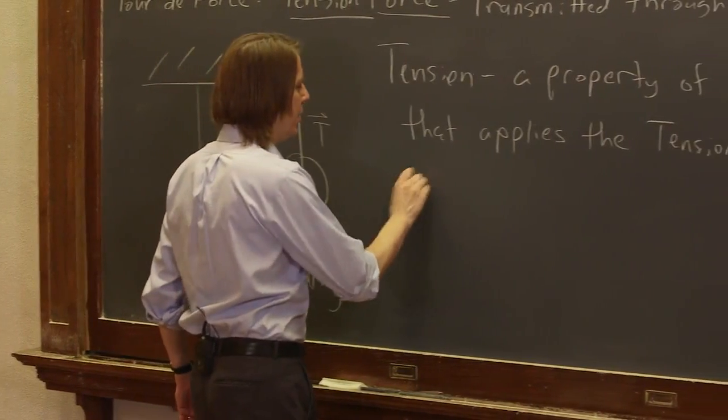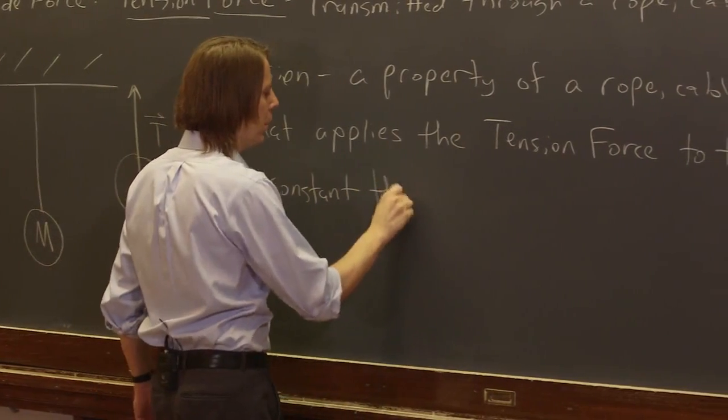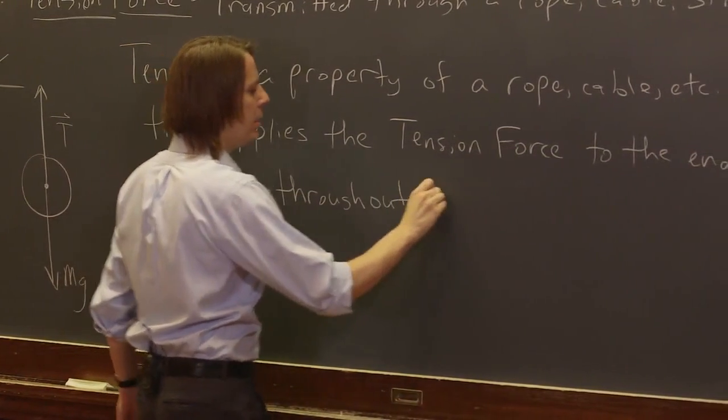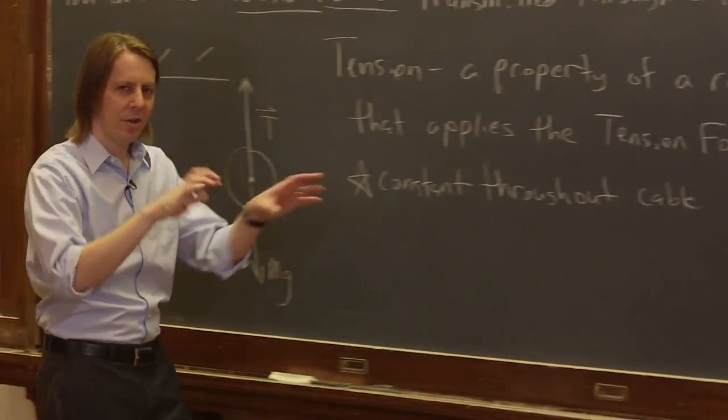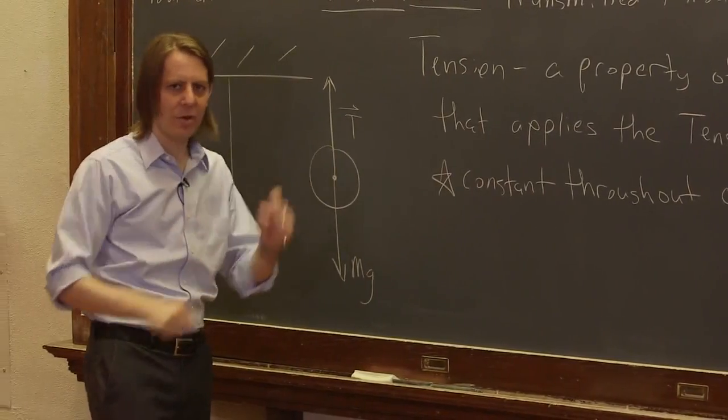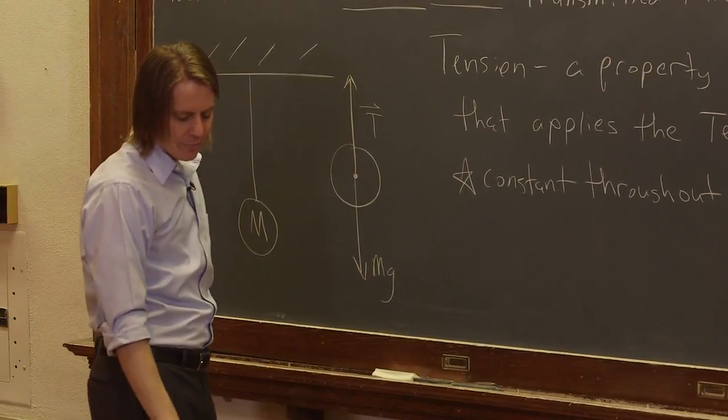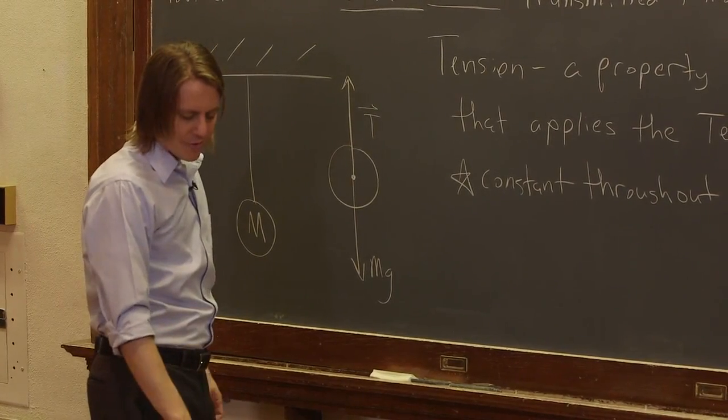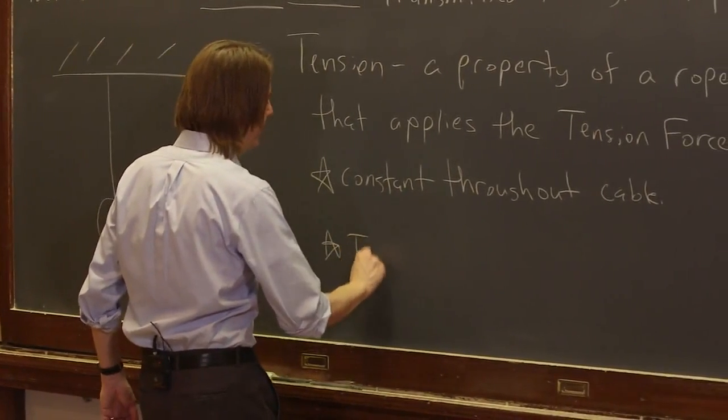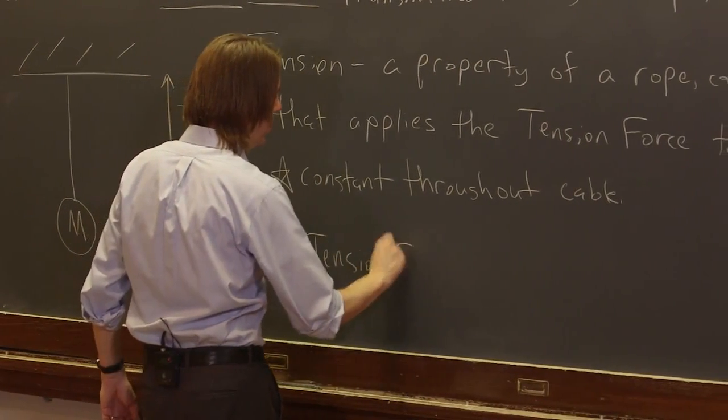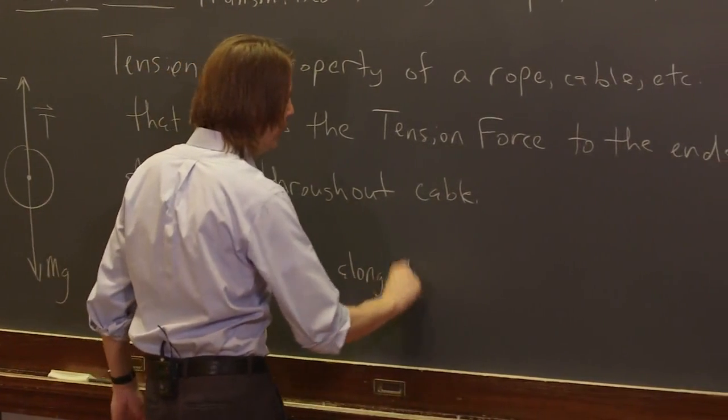Let's look at some properties of tension. It's constant throughout the cable. I'll just stick with cable. That's assuming nothing else is pulling on it on its side. It's not going over a pulley and accelerating or anything. If it's just a cable with two objects on each end with forces, then it's constant. It applies it to both ends. I already said that. And the tension, the tension force is along the string direction.